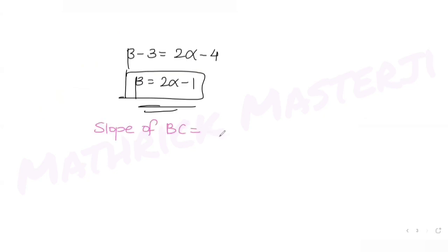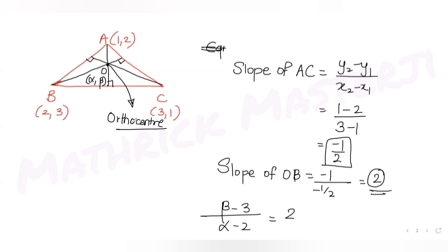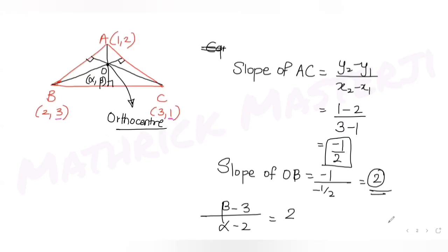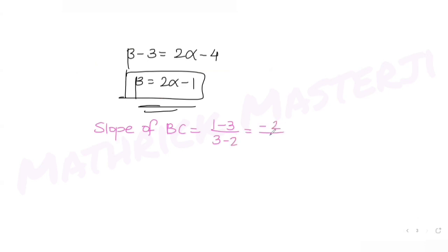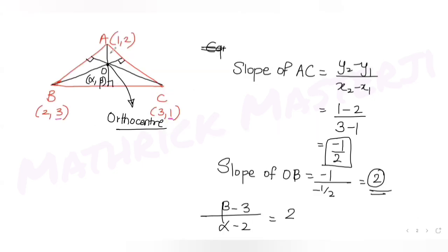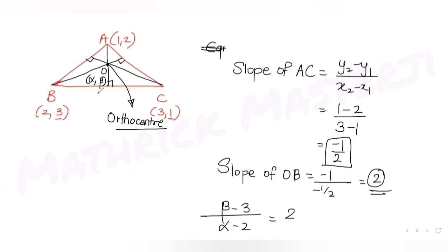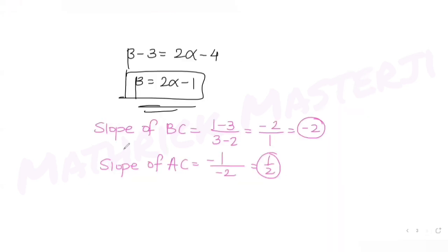Now let's find the slope of BC: (1-3)/(3-2) = -2/1 = -2. Since OA is perpendicular to BC, the slope of OA is the negative reciprocal of -2, which is 1/2.